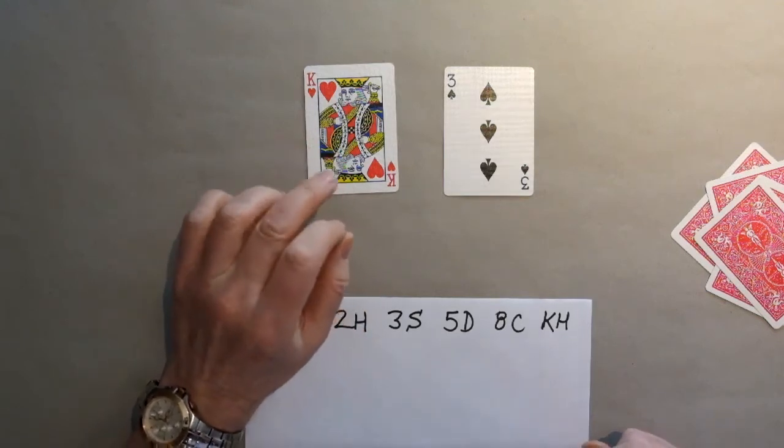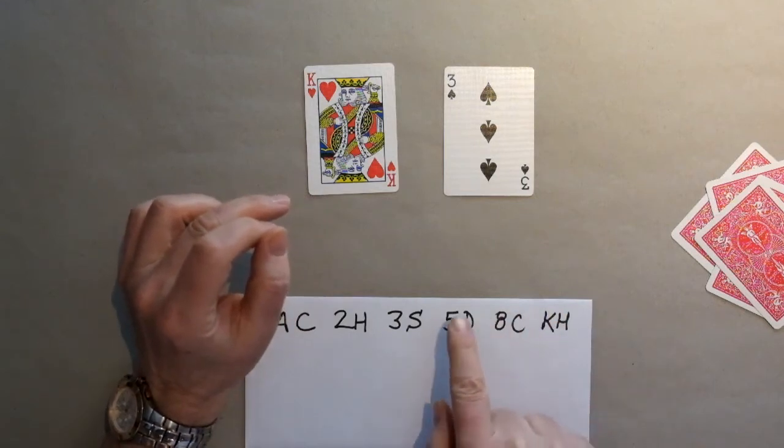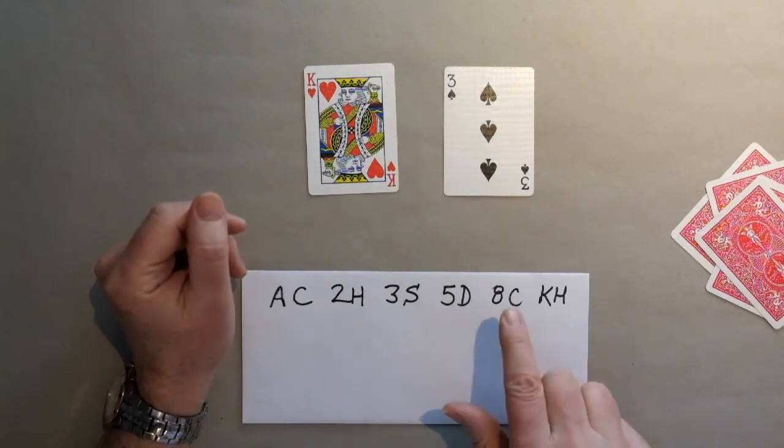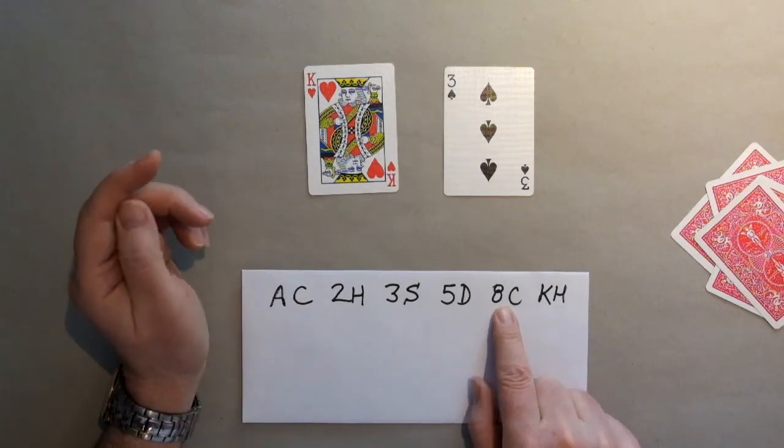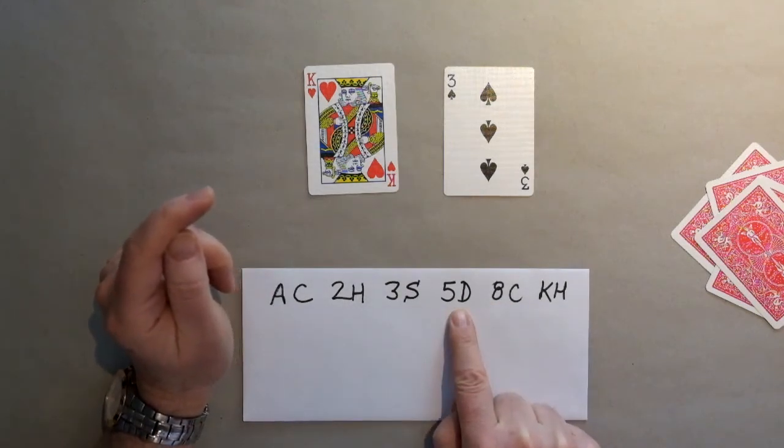Now, by the way, it's worth noting sometimes the spectator's total that they give you will be exactly equal to one of the fib numbers. For example, your spectators might say their total is 8. No problem. Just remember to always pick the largest fib that's less than the given total. In this case, that would be 5.